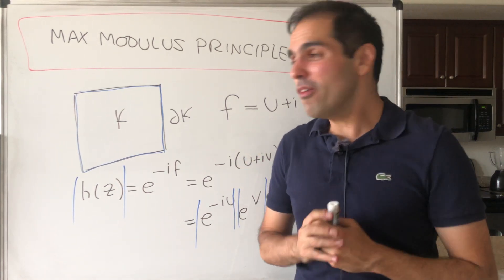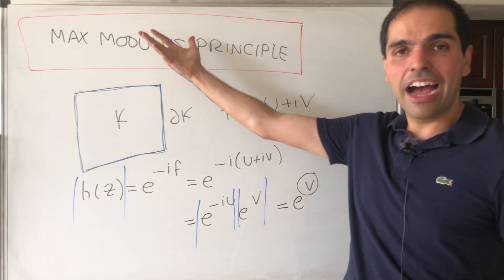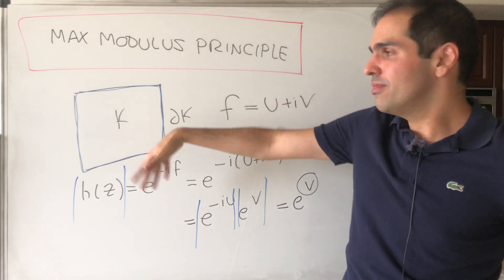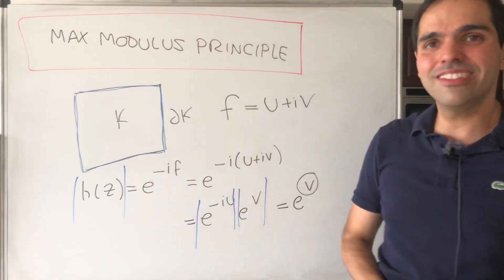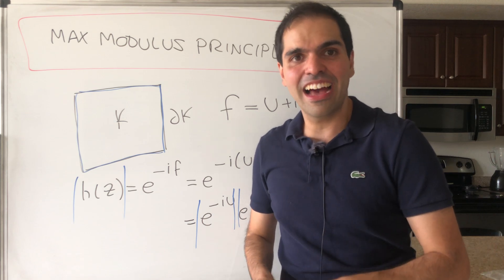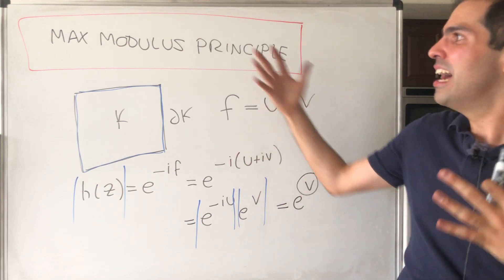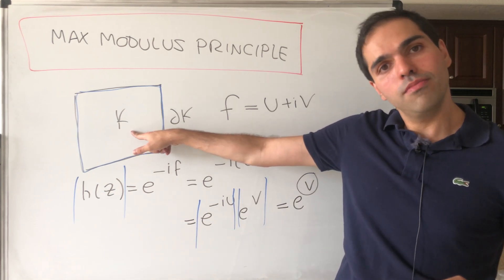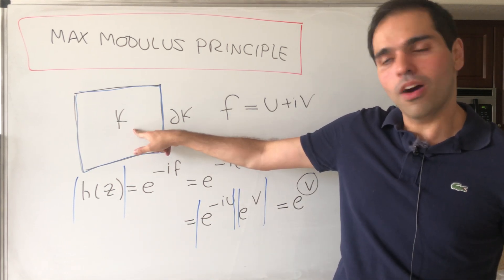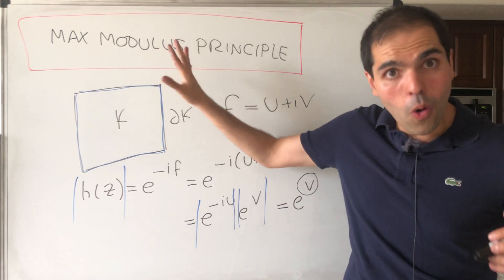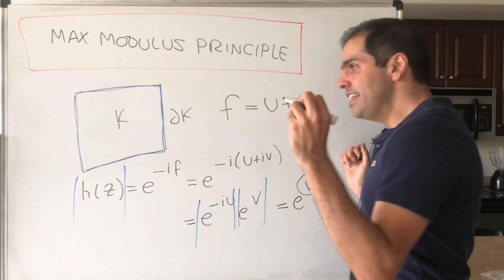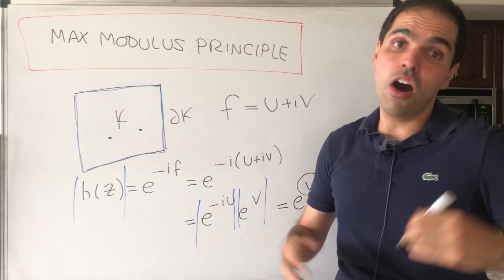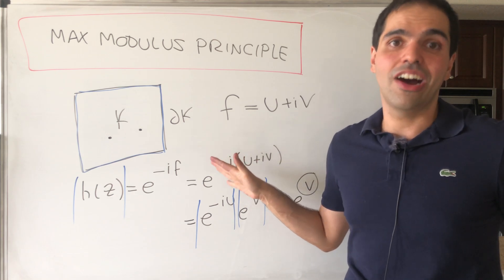And just a couple of remarks. I think by considering minus the function, you also get that the smallest minimum is also on the boundary. And not only that, there's something called the strong maximum modulus principle, which says not only is the minimum or maximum on the boundary, it's only on the boundary. Namely, the max/min cannot be inside the set other than the trivial case where it's constant.